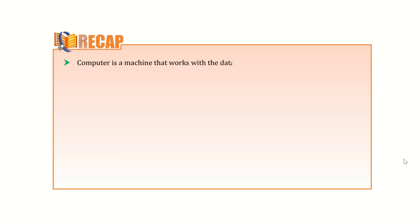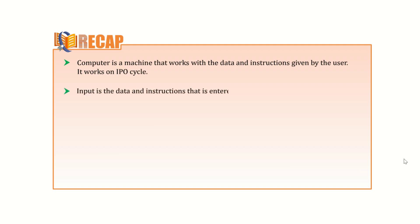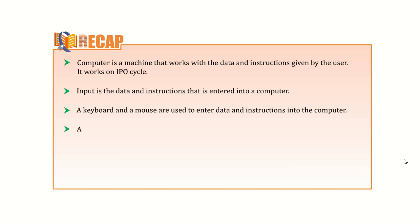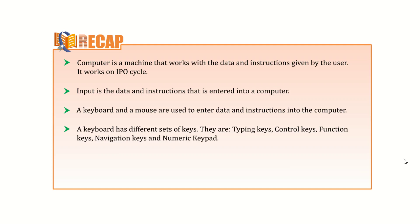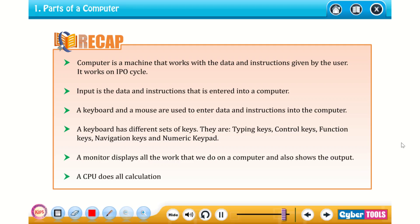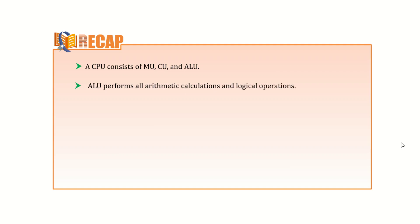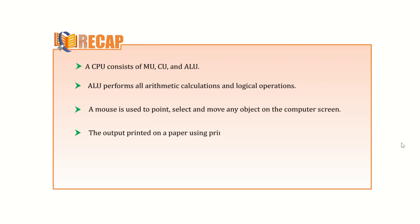Let us take a recap of this chapter. A computer is a machine that works with data and instructions given by the user and works on the IPO cycle. Input is the data and instructions entered into a computer using a keyboard and mouse. A keyboard has different sets of keys: typing keys, control keys, function keys, navigation keys, and numeric keypad. A monitor displays all the work and shows the output. A CPU does all calculations and displays results on the monitor; it consists of MU, CU, and ALU. ALU performs all arithmetic calculations and logical operations. A mouse is used to point, select, and move any object on the screen. The output printed on paper using a printer is called hard copy.